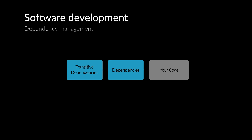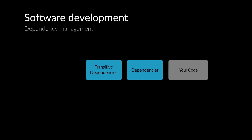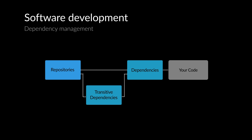Historically, people would look at their direct dependencies, decide what versions they wanted to use, and manually download the libraries from trusted locations called repositories to make them available to their code. They would also have to understand all the transitive dependencies and what versions were needed and manually download those too.